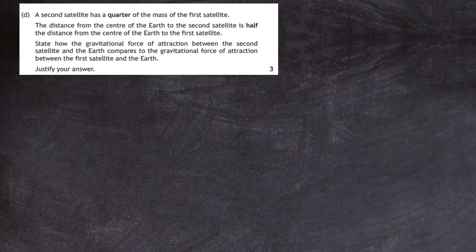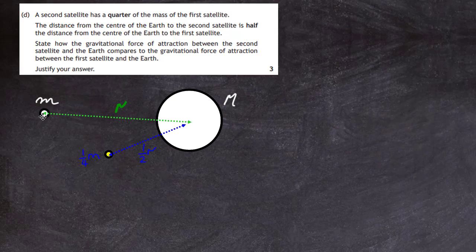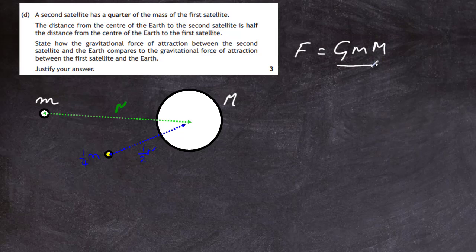Question 4, part D: a second satellite has a quarter of the mass of the first satellite, and its distance from the centre of the Earth is half that of the first satellite. We need to compare the gravitational force on the second satellite with that on the first. The first satellite of mass m at distance R has force F = GmM/R².